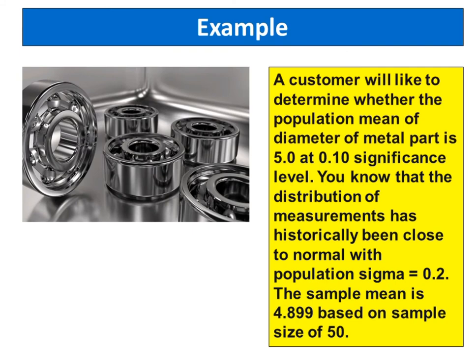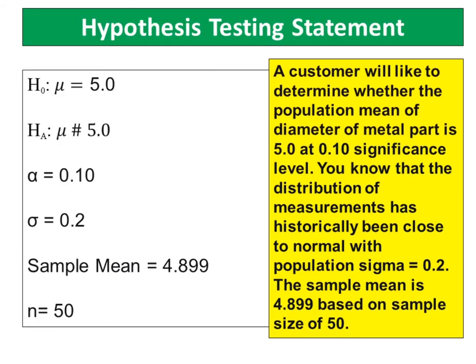For example, a customer would like to determine whether the population mean of the diameter of a metal part is 5, at a 0.10 significance level. You know that the distribution of measurements has historically been close to normal with population sigma equals 0.2. The sample mean is 4.899 based on a sample size of 50. The null hypothesis is the population mean equal to 5, while the alternative hypothesis is the population mean differs from 5. The level of significance alpha is 0.10, population standard deviation is 0.2, sample mean is 4.899, and sample size is 50.